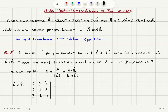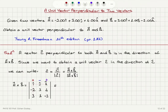I'm going to evaluate this determinant with respect to the first row. Therefore, I have a plus sign for i-hat, a minus sign for j-hat, and a plus sign for k-hat. For the first term, I cross out the first row and first column, then take the product of the remaining elements: 3 times minus 3, minus 4 times 1, multiplied by plus i-hat.